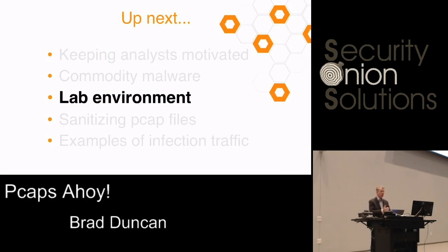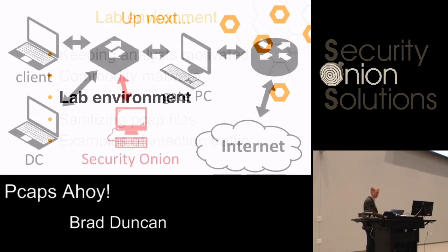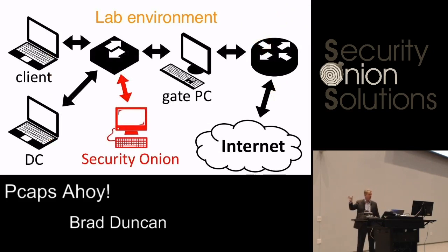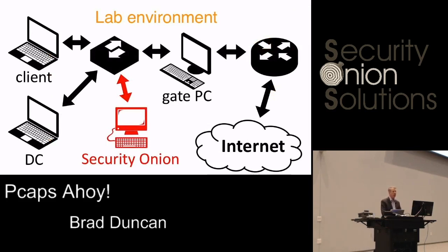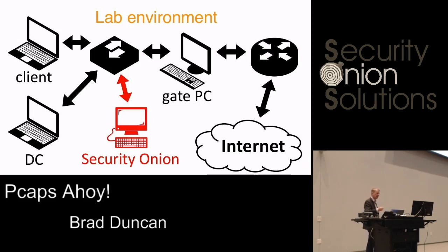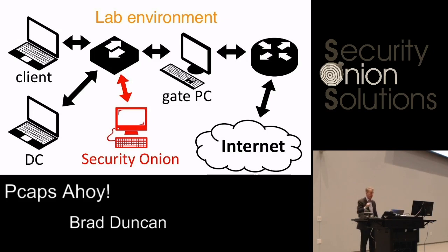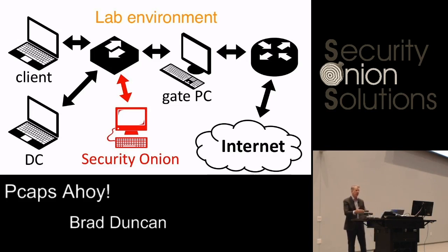In order to look at commodity malware, you need a lab environment — basically a Windows machine that you're running the malware on to see what happens. My setup includes a domain controller just to see what certain types of malware do when they infect a client, to see if it tries to move laterally to the domain controller. I use Security Onion or TCP replay to review the traffic, which allows me to play it back as fast as possible without waiting.